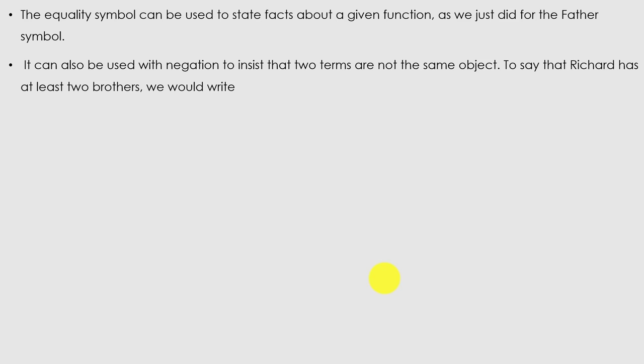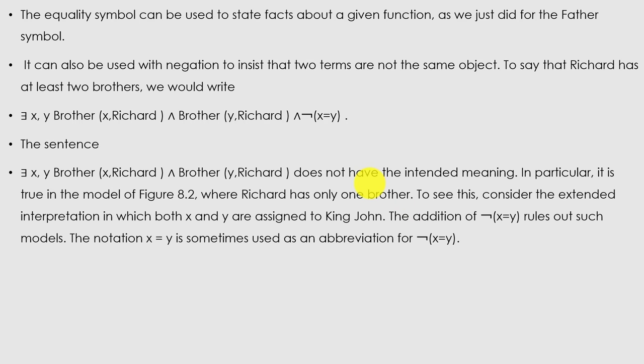The equality symbol can be used with negation to insist that two terms are not the same object. To say that Richard has at least two brothers we write an expression using ∃x ∃y Brother(x, Richard) ∧ Brother(y, Richard) ∧ (x ≠ y). Without the x ≠ y constraint, the sentence would be satisfied in a model where Richard has only one brother, by assigning both x and y to King John. The addition of ¬(x = y) rules out such a model.